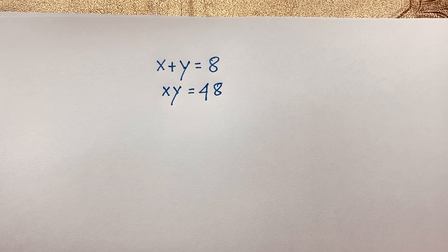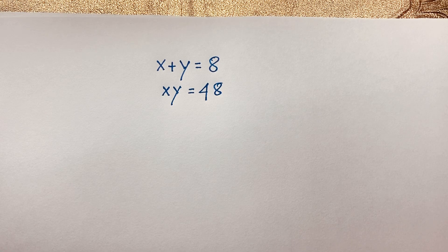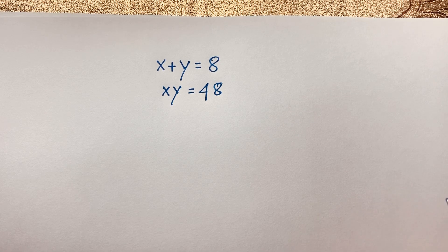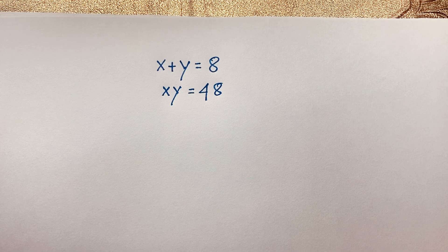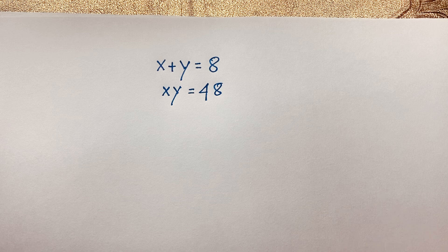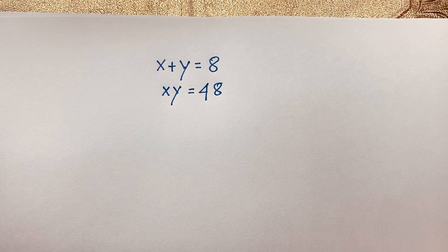Hello everyone. In this video, we have solved a nice German Math Olympiad question. X plus Y is equal to 8, and X times Y is equal to 48. We have to find out what is the value of X and Y in this Math Olympiad question.